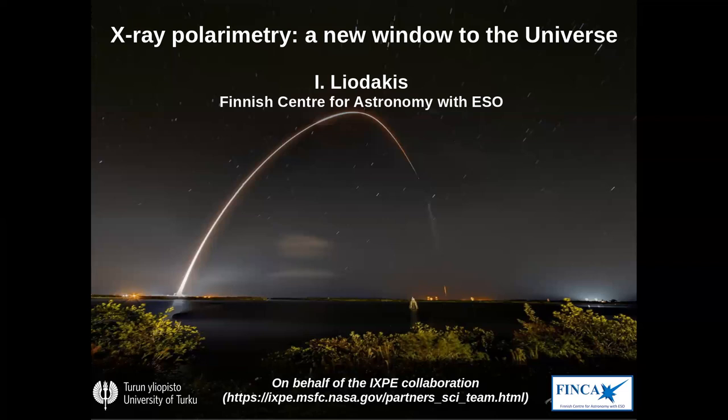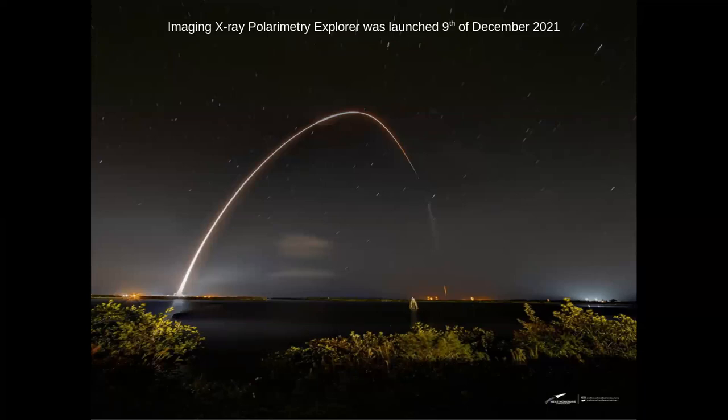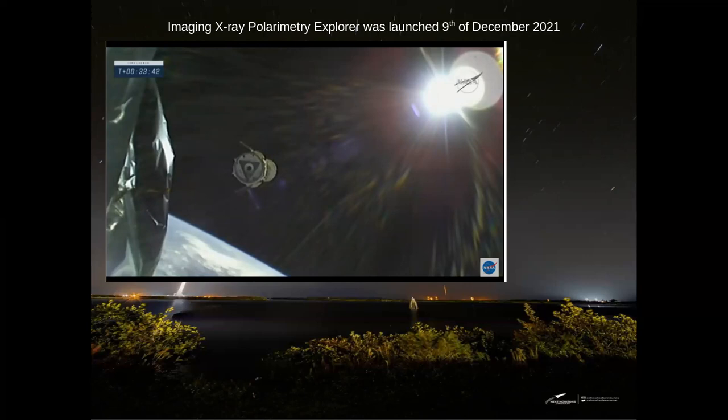That new window to the universe with X-ray polarization started on the 9th of September 2021 when NASA launched the first X-ray polarimeter, which is the Imaging X-ray Polarimetry Explorer. What we see here is the trajectory of the Falcon rocket that took us to our equatorial orbit about 500 kilometers from the ground. This is the exact moment that IXPE is released into its orbit, and the flaps popping out are the solar panels that automatically activate.